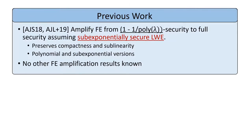What has previously been done in FE amplification? In AGS18 and AJLMS19, they show that you can amplify FE from 1 minus 1 over poly(lambda) security — meaning the adversary can almost always break the scheme — to full security, assuming sub-exponentially secure LWE. This transformation preserves both compactness and sublinearity. They also have both polynomial and sub-exponential versions of their theorem: in the polynomial version, adversaries are of polynomial size and the distinguishing advantage is made negligible; in the sub-exponential version, adversaries of sub-exponential size and the advantage is made sub-exponentially small. Apart from these two works, no other FE amplification results are known.